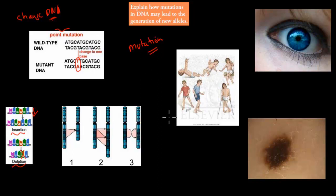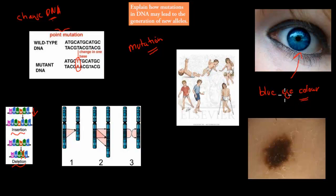A couple of examples of mutations you might be familiar with: the blue eye color is an example of a mutation. Now, blue eye color is not necessarily something negative — it's just different from brown and from green. Blue eye color wasn't always around; it's been around only for a couple of hundred thousand years. It came about because for one individual, there was a mutation in their DNA which gave them blue eye color, and then that passed on from generation to generation.